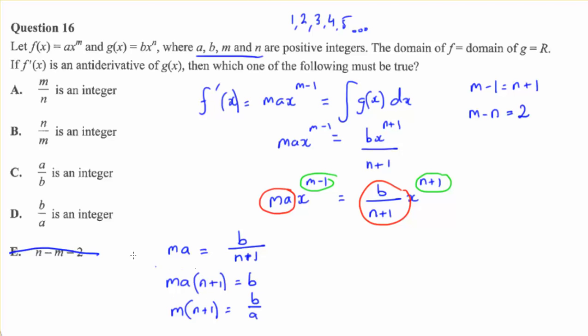So, the answer here is d. The thing that must be true is that b on a is an integer. Very tricky question.